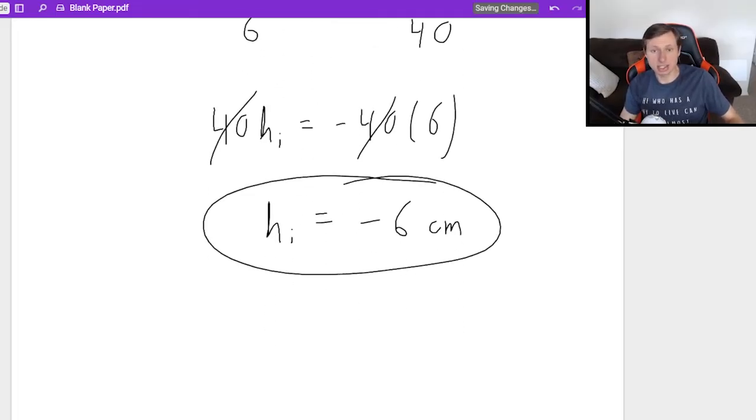So basically, it's 6 centimeters, but it's also inverted. That's what the negative sign there means. And it also means since it's inverted, it's going to be a real image.